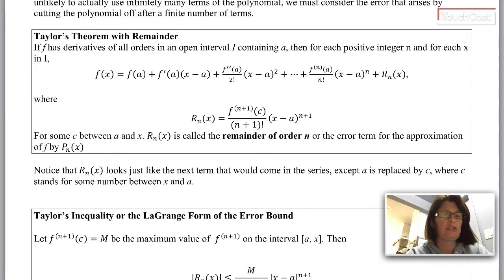Let me call your attention here. That remainder looks just like the next term in the Taylor series should have looked, except that instead of using a here, we're using c. So c could be anywhere along the interval between x and a, but we're going to be able to put a limit on it in a lot of cases, at least in all cases that show up on the AP test.